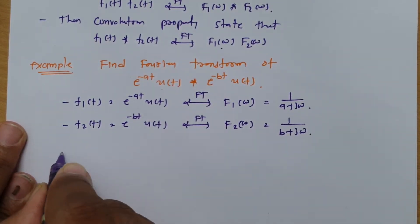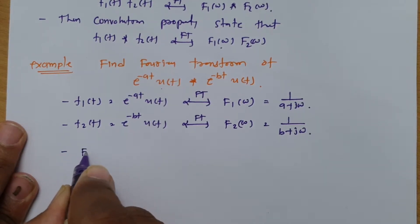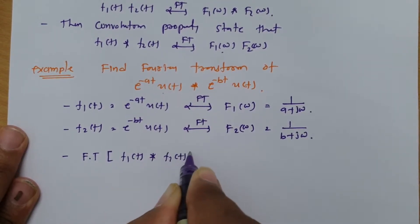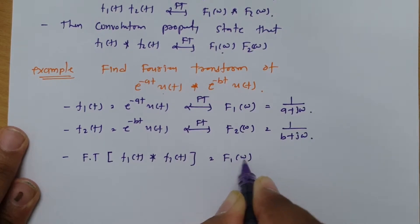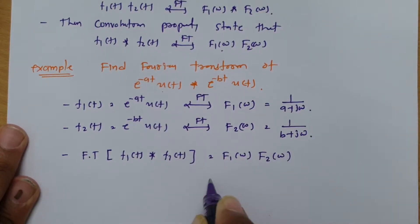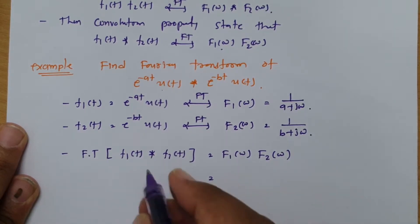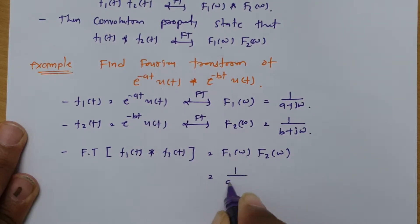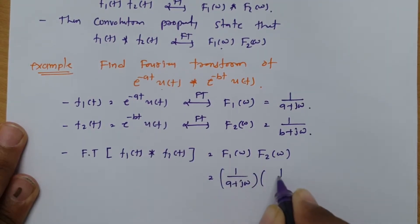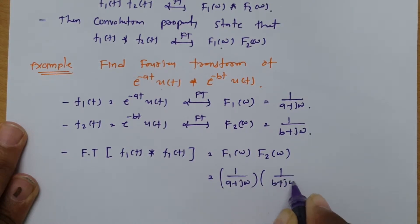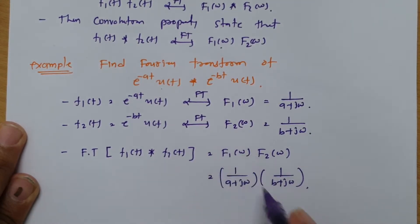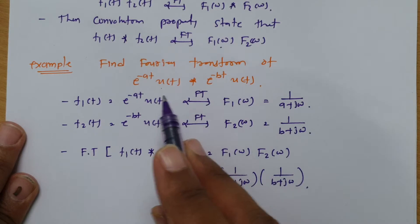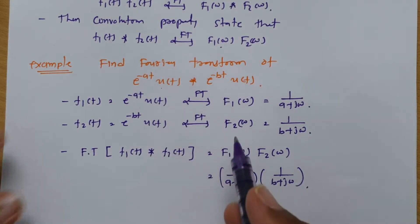As per the convolution property, the Fourier transform of f1(t) convolved with f2(t) equals F1(ω) × F2(ω). So the Fourier transform of this convolution is 1/(a + jω) × 1/(b + jω). This makes the calculation very easy — in just one step one can clearly solve this Fourier transform. Convolution and multiplication property is so essential.